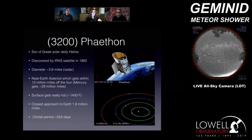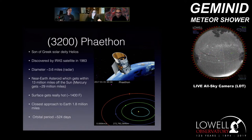The interesting part about Phaethon is that it gets very, very close to the sun — within 13 million miles. In comparison, Mercury, the innermost planet in our solar system, gets to within 29 million miles of the sun. So Phaethon gets much, much closer to the sun than Mercury does.